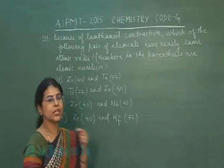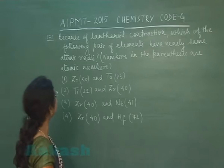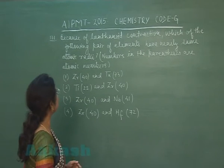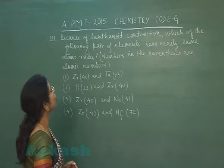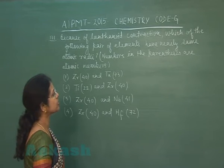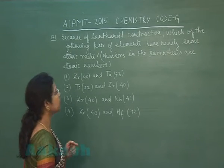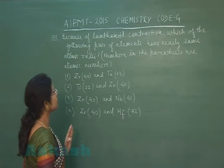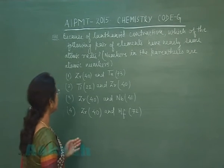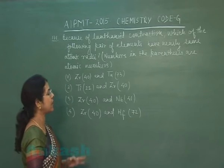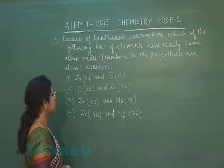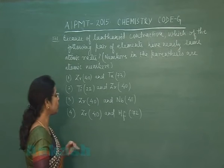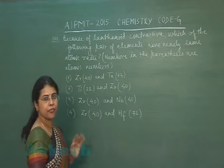Question number 171: Because of lanthanoid contraction, which of the following pairs of elements have nearly the same atomic radii? Option 1: Zirconium and Ta. Option 2: Titanium and Zirconium. Option 3: Zirconium and Niobium. Option 4: Zirconium and Hafnium.